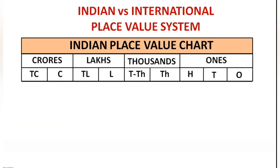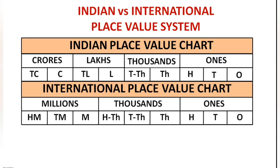Hello everyone, today let us compare both Indian and international place value charts and arrive at some important conclusions. Here is the Indian place value chart, which consists of ones, thousands, lakhs, and crores periods. And this is the international place value chart, which consists of ones, thousands, and millions periods.